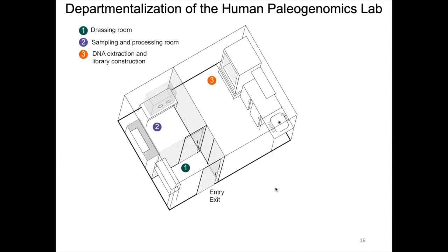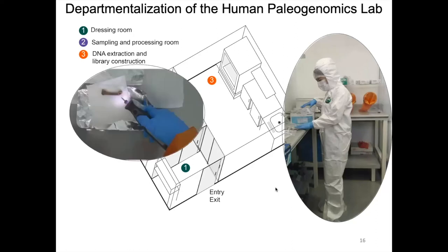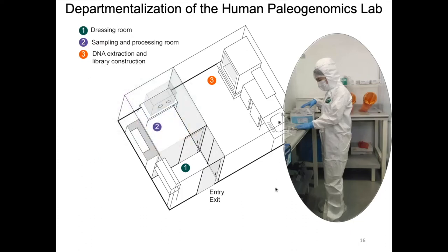If we look inside our palaeogenomics lab, we have three areas assigned to specific tasks. We have a dressing room, indicated by number one, in which we wear a full tie-back suit, gloves, shoe covers, and hair coverings. In the second area, we sample and process the archaeological remains, as shown in this image where someone is subsampling an ancient bone. In the third area, we extract the DNA and build the libraries for next-generation sequencing.